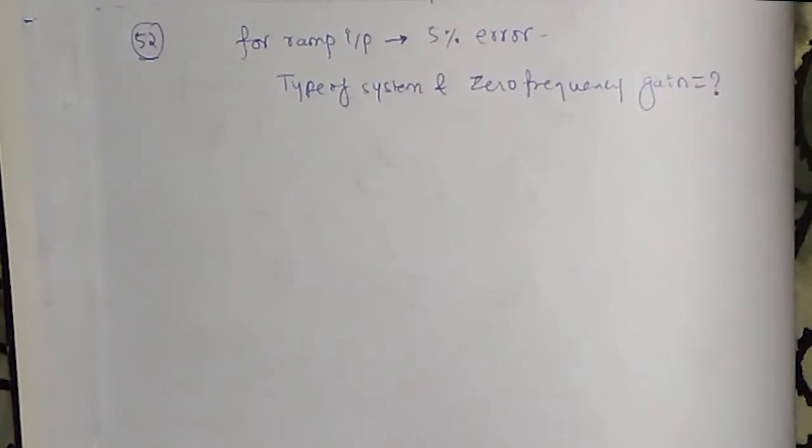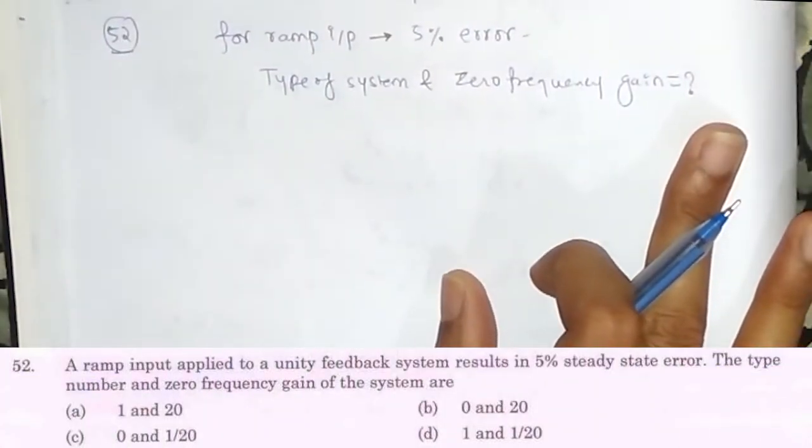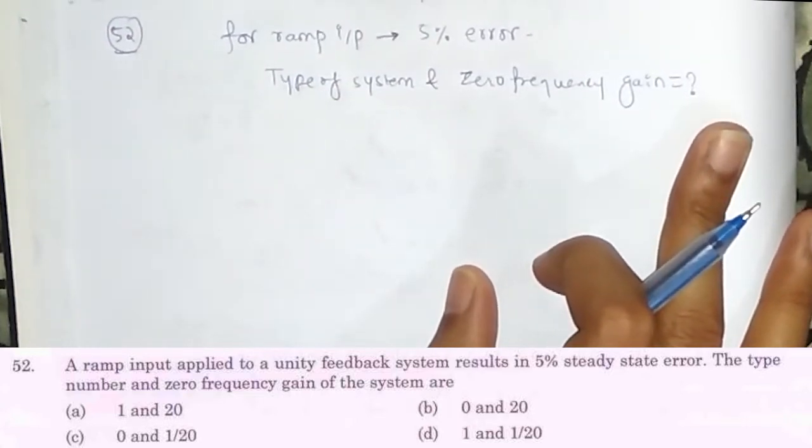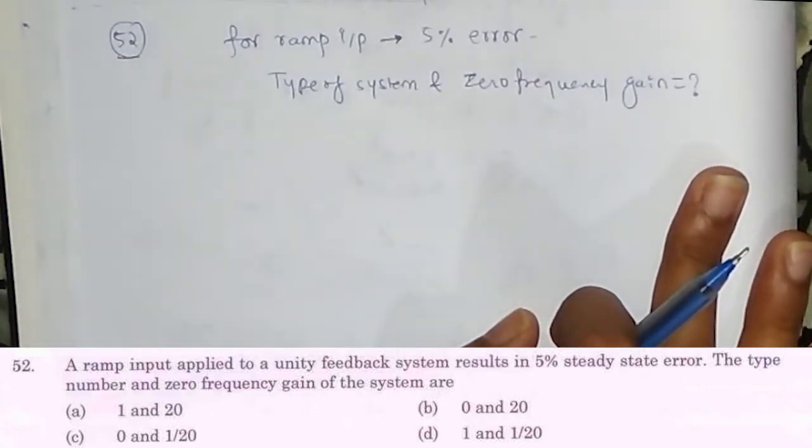Hello friends, welcome to GateYan. Here we have given a ramp input. For a ramp input we have a steady state error of 5% and it is asking what is the type of the system and what is the zero frequency gain.